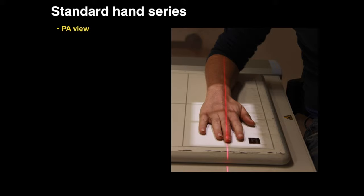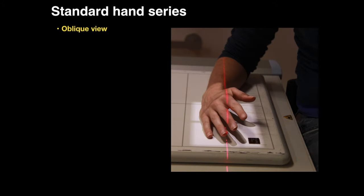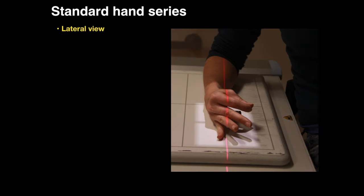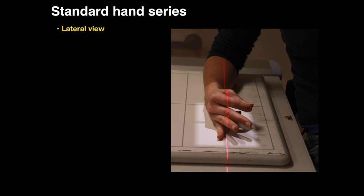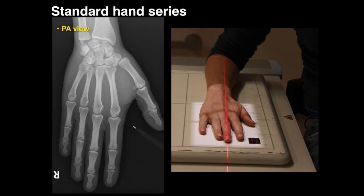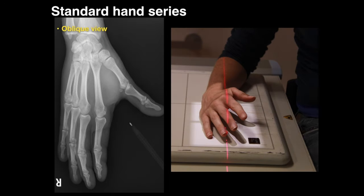The standard hand series of x-rays consists of the following. First, a PA view — the posterior-anterior view — where the hand is placed flat down on the viewing machine and the x-rays go through the back of the hand first, posterior to anterior. Next is an oblique view, where the hand is at an angle, and then a lateral view. So the x-rays are a PA view, an oblique view, and a lateral view.